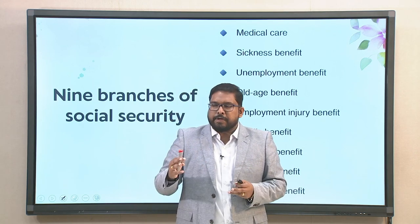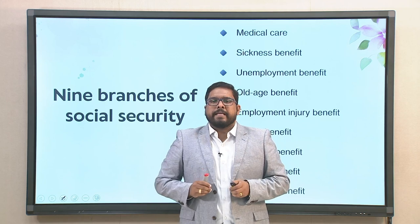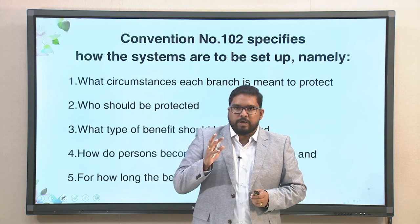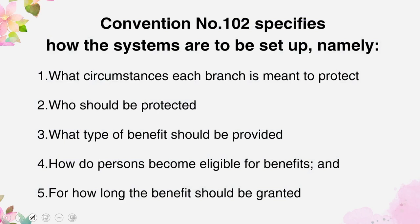Convention number 102 specifies how the systems are to be set up through five measures: what circumstances each branch is meant to protect; who should be protected; what type of benefit should be provided; how persons become eligible for the benefits; and for how long the benefit should be granted.